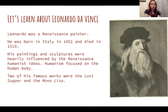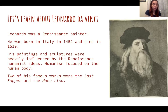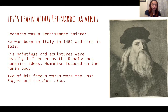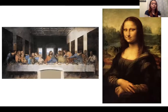Let's learn about Leonardo da Vinci. Leonardo was a Renaissance painter. He was born in Italy in 1452 and died in 1519. His paintings and sculptures were heavily influenced by Renaissance humanist ideas. Humanism focused on the human body, so in many sculptures and paintings during the Renaissance they are based on the human body. Two of his famous works were the Last Supper and the Mona Lisa, which we will be learning about today.